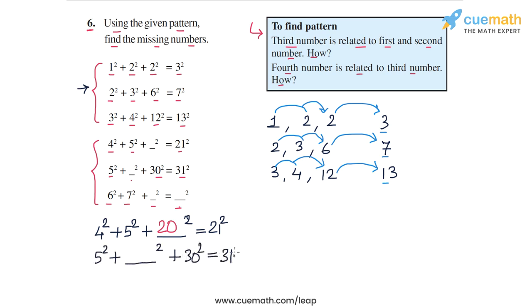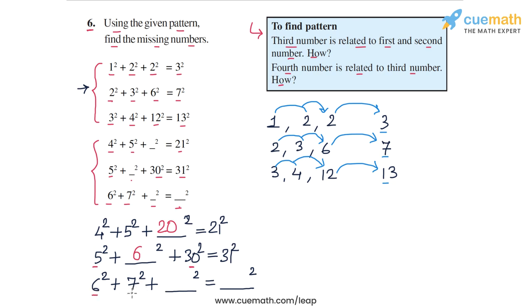We know the third number is the product of the first two numbers, so 30 is the product of 5 and 6, meaning the blank is 6: giving us 5² + 6² + 30² = 31². The last incomplete statement is 6² + 7² + ?² = ?². The third number is the product of 6 and 7, which is 42, and the fourth number is one more than 42, which is 43. So the complete statement is 6² + 7² + 42² = 43².